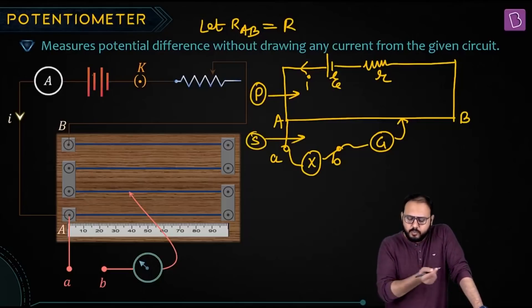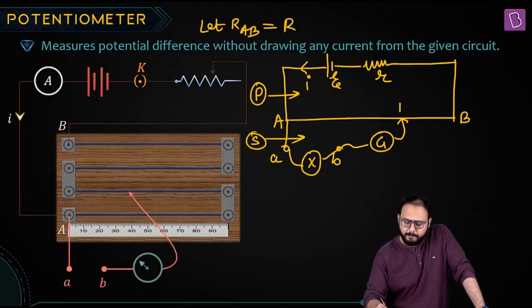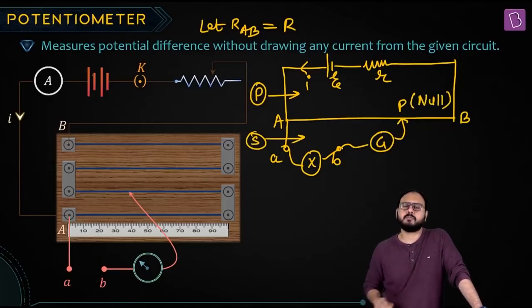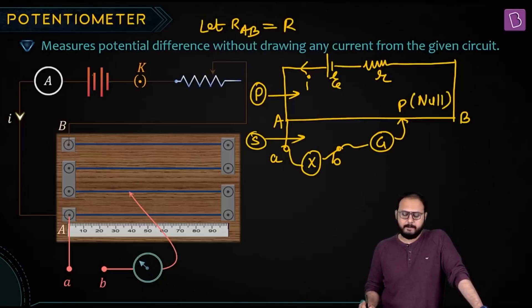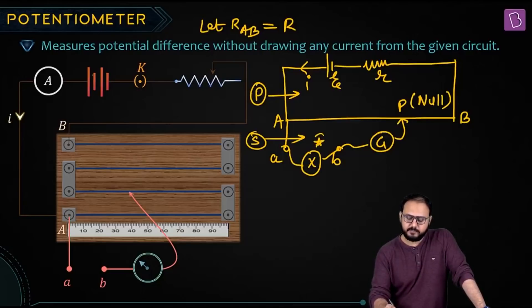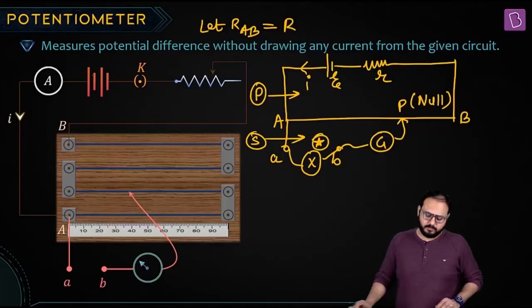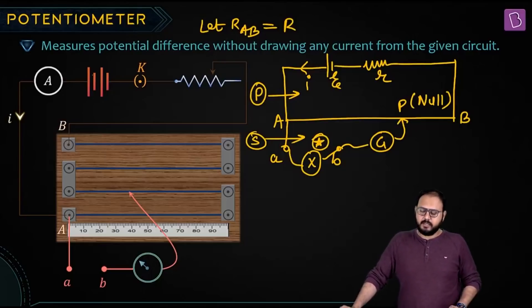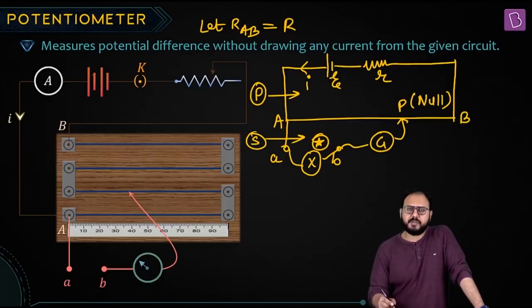This jockey is moving, moving, moving — and finds a null point. Do you agree that potential across your X will be same as VA minus VP? Null deflection means there is no current in G.